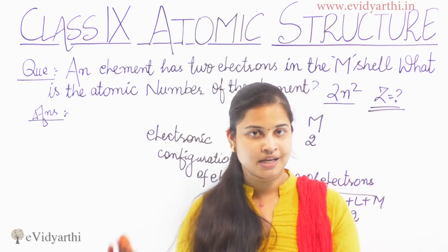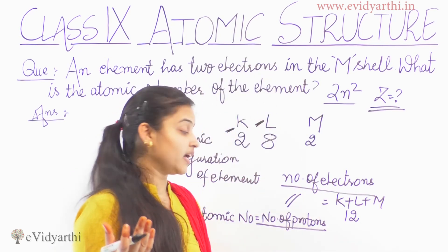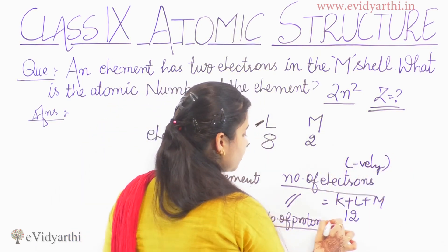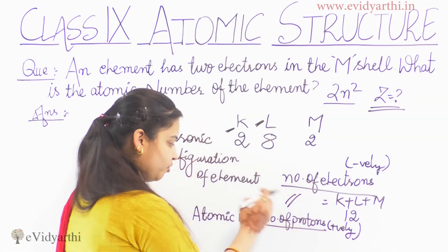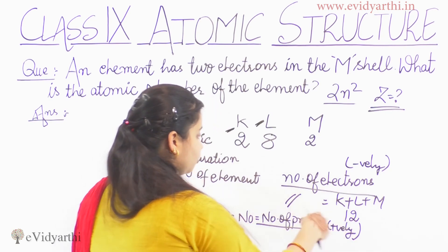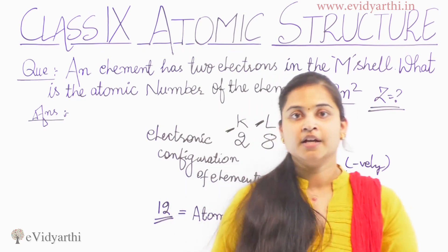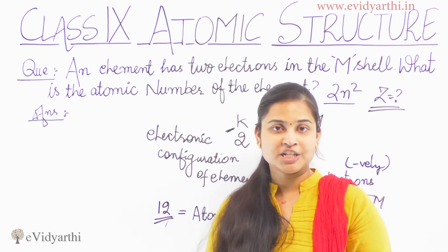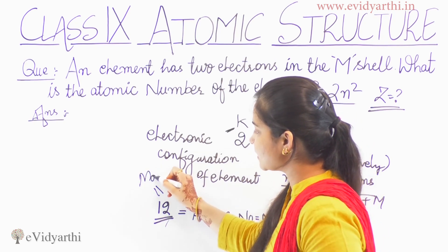For the atom to be neutral and stable, the number of protons must equal the number of electrons. Electrons are negatively charged and protons are positively charged. So the atomic number of the element is 12. The element with atomic number 12 is magnesium. So atomic number 12 means the element is magnesium.